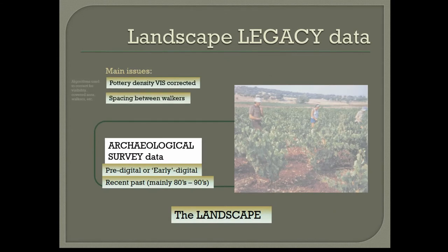When dealing with areas covered by intensive surface surveys, the main dataset is the density of surface potsherds, corrected by several factors — first of all, visibility on the ground. Spacing between workers also needs to be considered. Critical issues for data biases are fabric definitions as well as chronological attribution of potsherds.